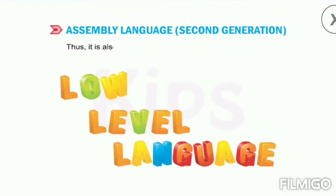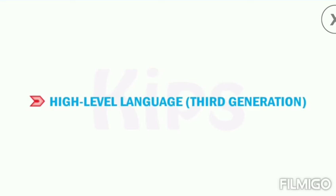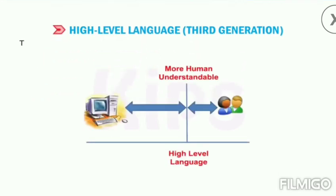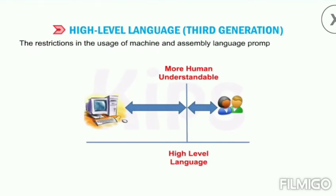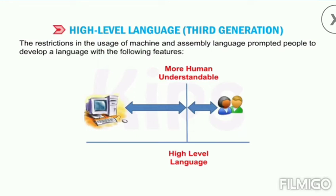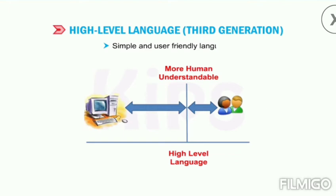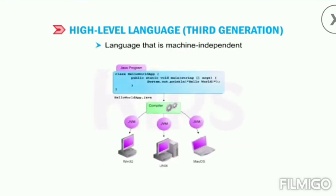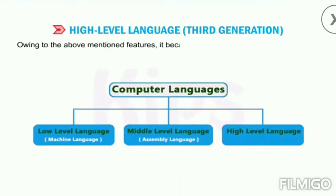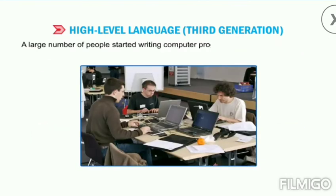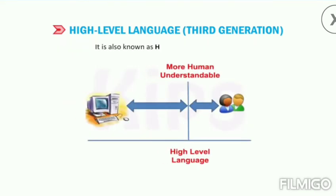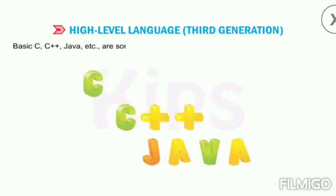Like machine language, assembly language is also machine dependent and programming in this language is quite time-consuming, so it is also regarded as a low-level language (LLL). The restrictions in machine and assembly languages prompted people to develop a high-level language — one that is simple, user-friendly, and machine independent. This made it easy to learn and use, and a large number of people started writing programs using these languages. It is also known as high-level language (HLL), and is quite similar to the English language.